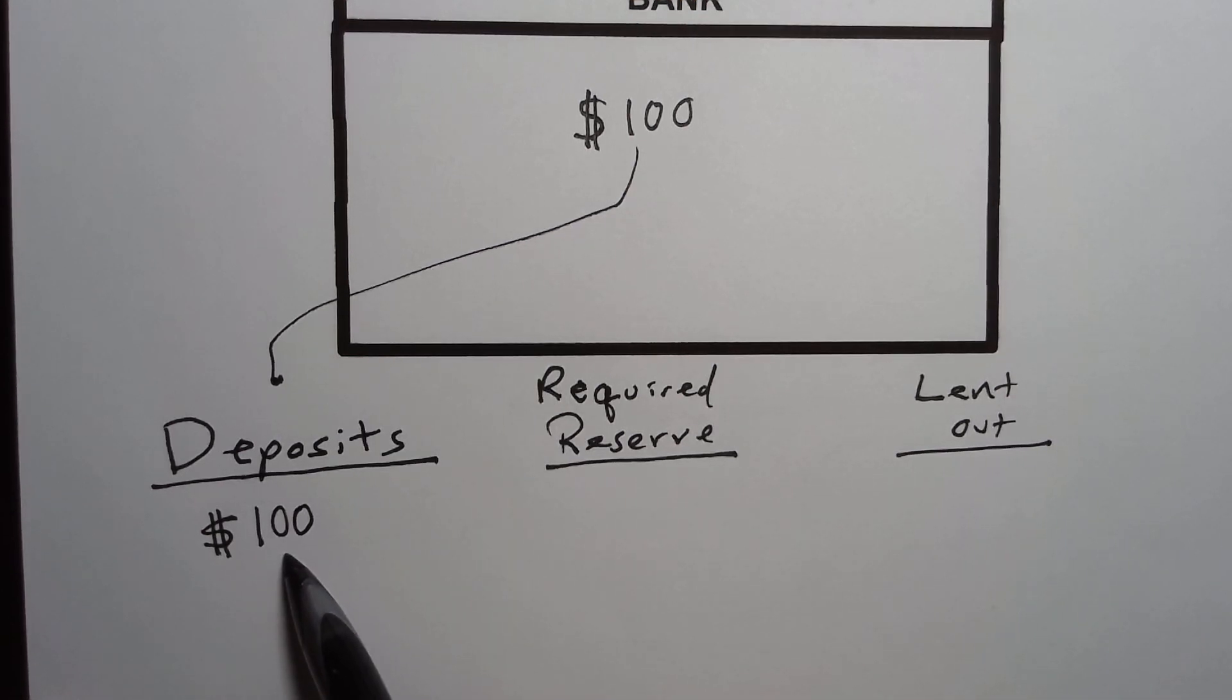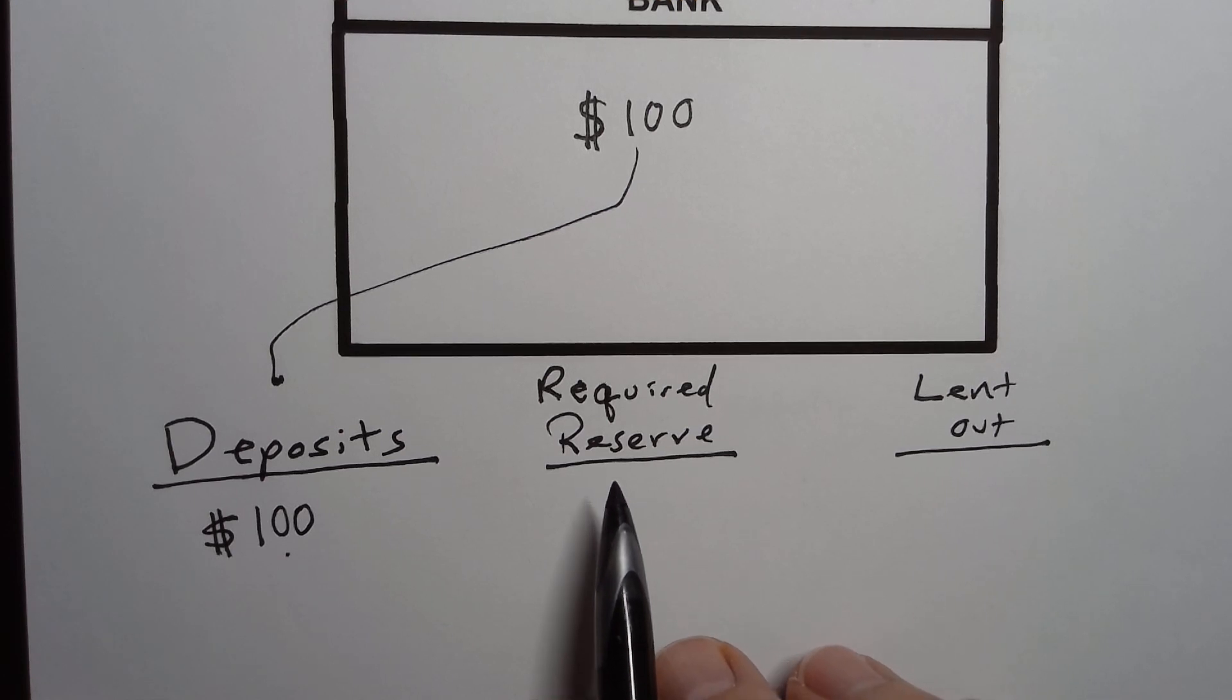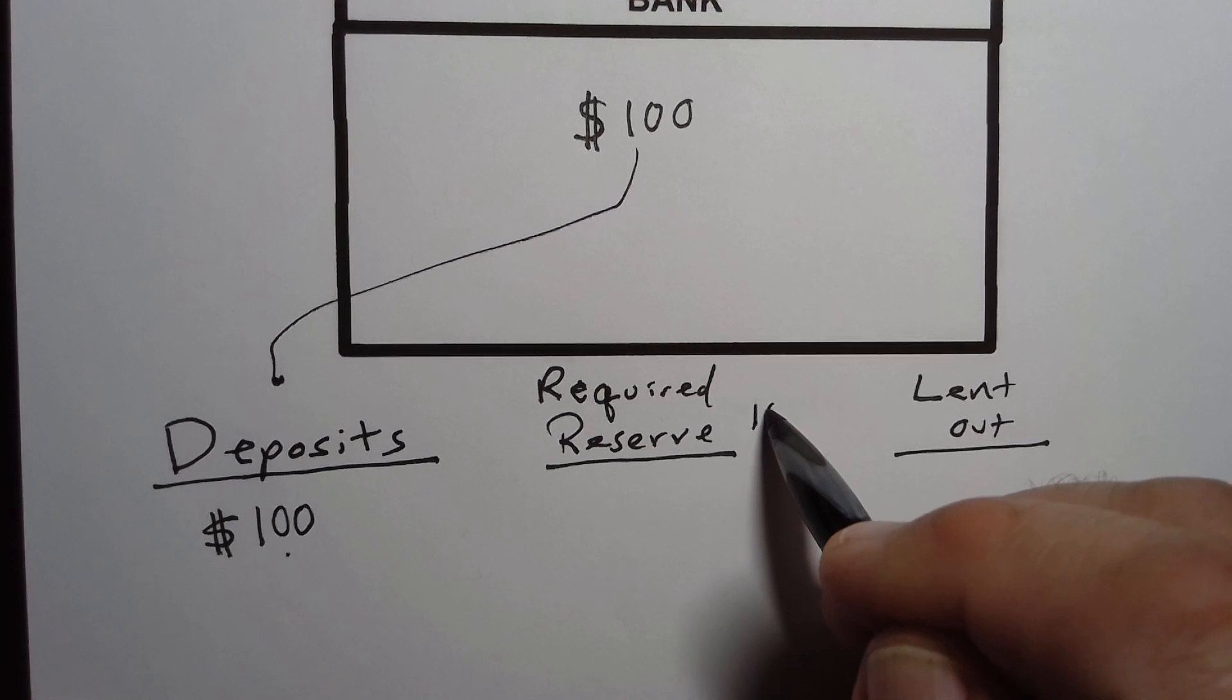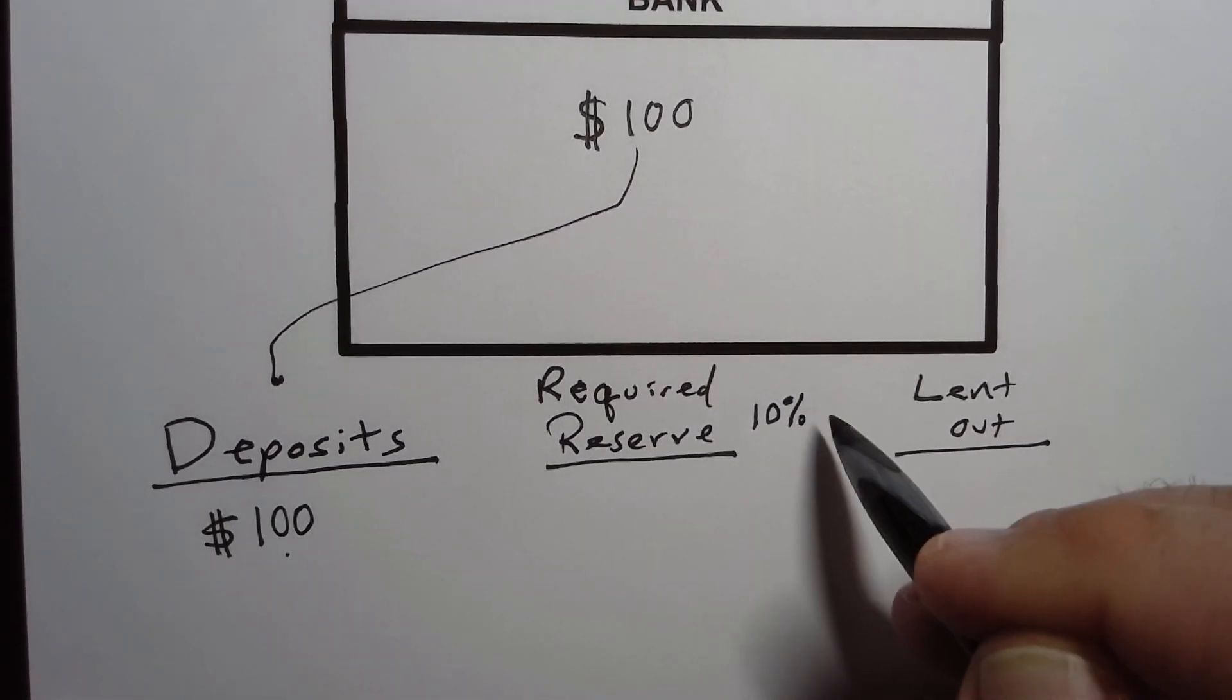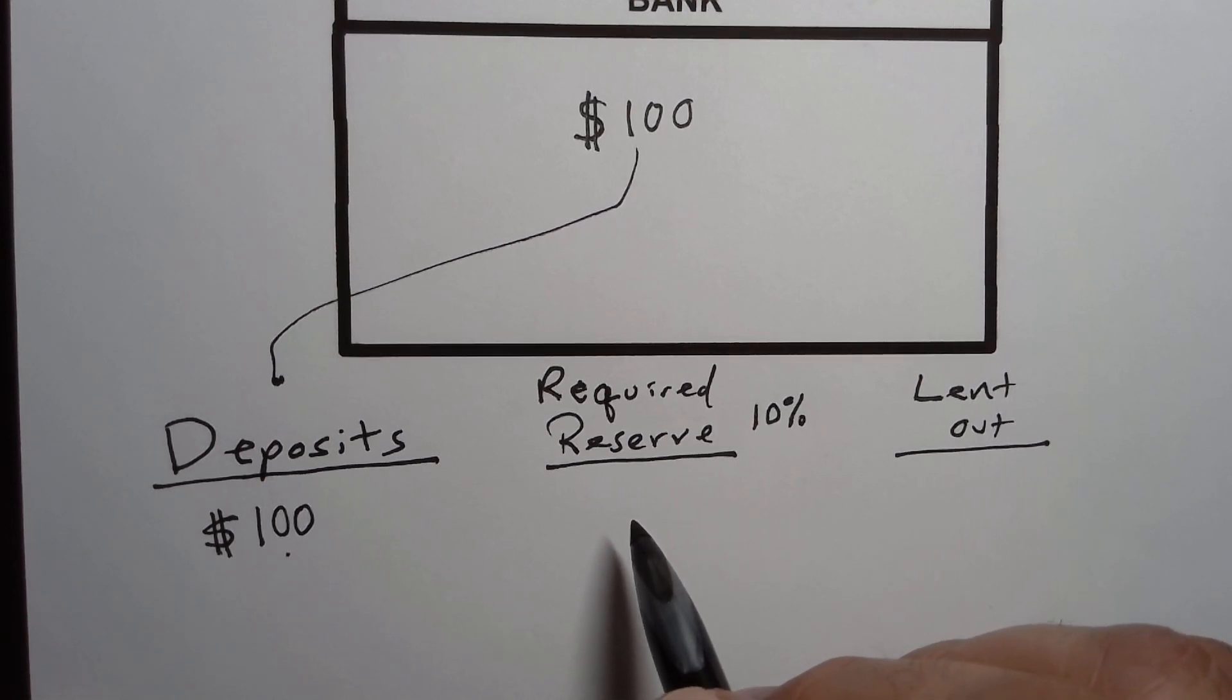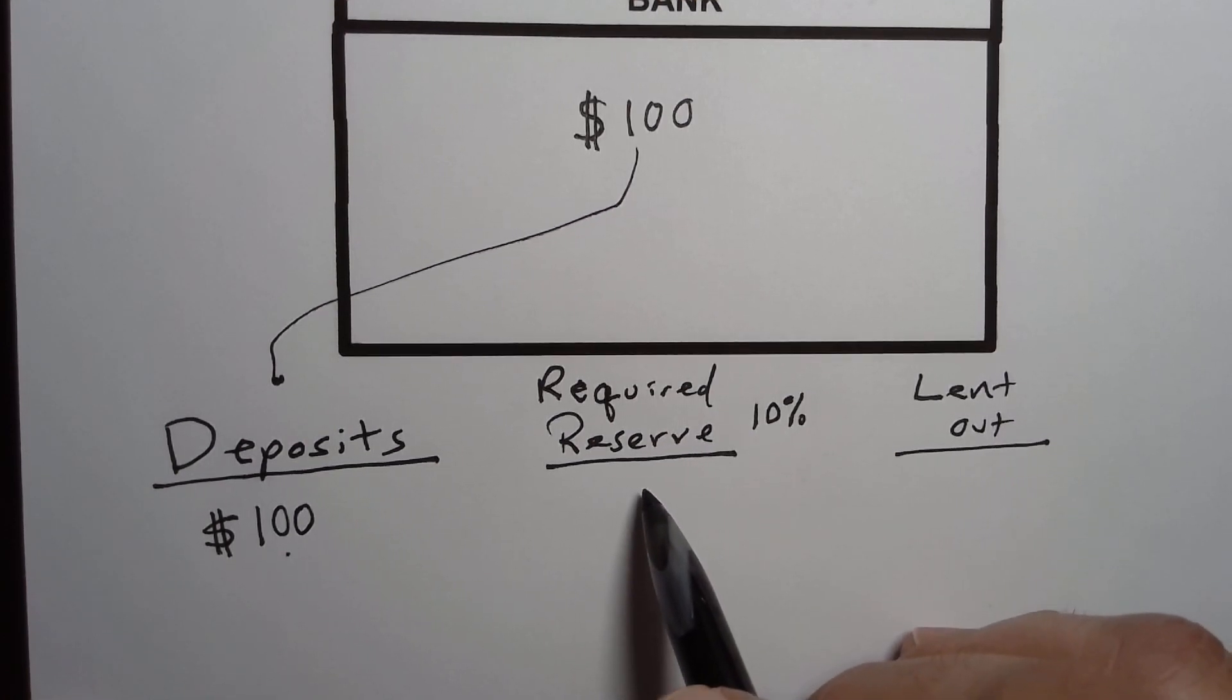So you've deposited a hundred dollars in your bank. Fractional reserve banking legally requires the bank only to keep a certain amount of that deposit on hand and they can then use the rest of it. So a common amount might be 10%. Sometimes it's more than that. Sometimes it's even less, but for purposes of our demonstration, we're going to say that the law only requires 10% to be reserved.